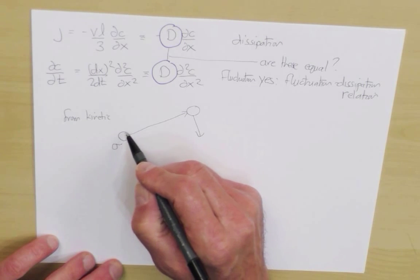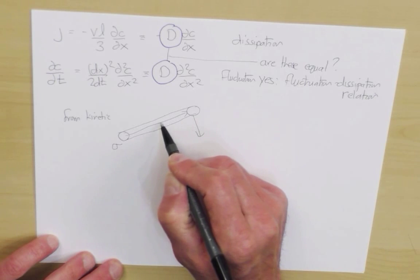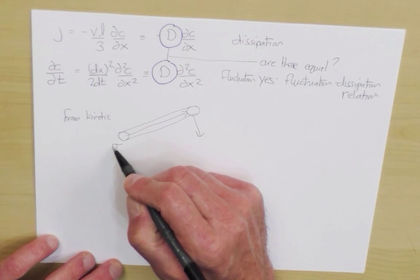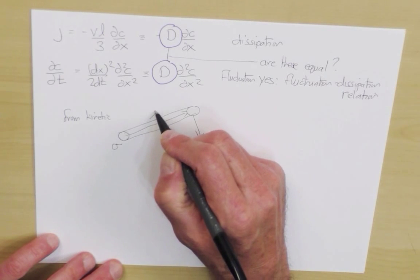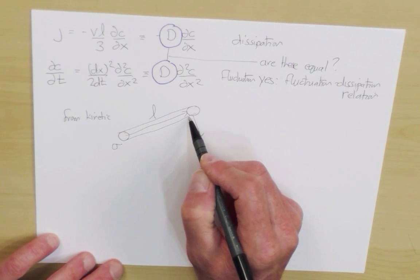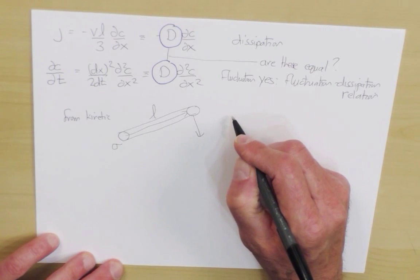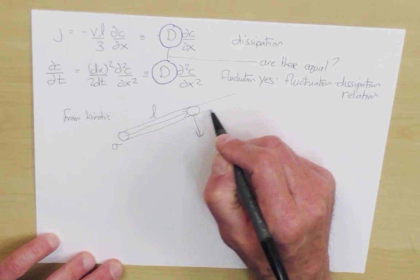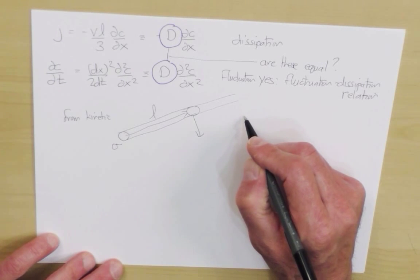And so as it's moving about, it sweeps out a collision tube whose radius is roughly of the order of the square root of the cross-sectional area of the molecule. And it goes a distance L, and we determine the characteristic distance that a particle moves before it collides, the mean free path, by the criterion that when there is of the order of one other molecule in this swept out tube, this collision tube.